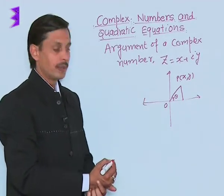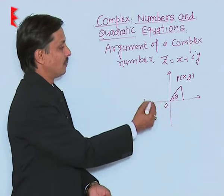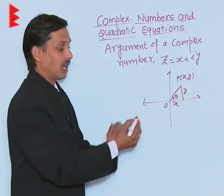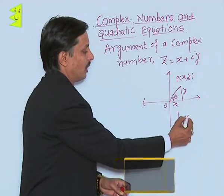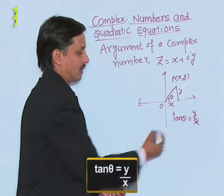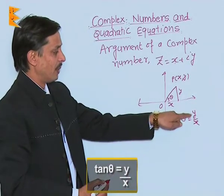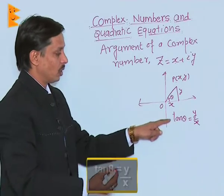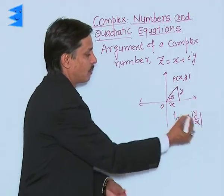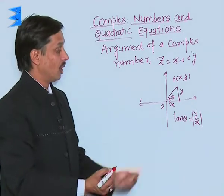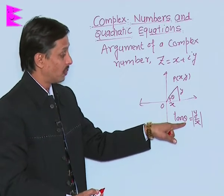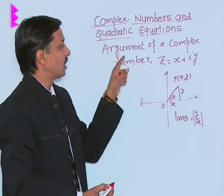For finding the argument, we have the relation: if the horizontal side is x, the vertical side is y, and the angle is theta, then tan theta equals y upon x — that is, the imaginary part divided by the real part. So tan theta is given by y upon x, and from this value of theta, the argument is determined.